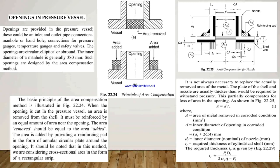In figure 22.4, the principle of area compensation is shown. In figure A, the area is removed at the opening; in figure B, the area is added. The basic principle of the area compensation method is: when an opening is cut in a pressure vessel, the area removed from the shell must be reinforced by an equal amount of area near the opening. The area removed should be equal to the area added, by providing a reinforcing pad in the form of a circular plate around the opening. In this method we consider the cross-sectional area in the form of a rectangular strip.